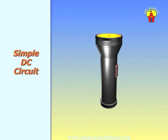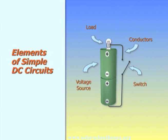Now let's look at simple systems for using DC electricity. These electrical systems are called DC circuits. A flashlight is a simple DC circuit that you're probably familiar with. Like all simple DC circuits, flashlights have several main elements. The first is the voltage source — in this case one or more batteries. Electricity flows from the batteries through the load. A load is anything that uses electricity in a circuit. In a flashlight, the load is the light bulb.